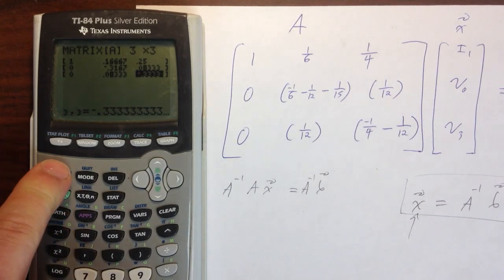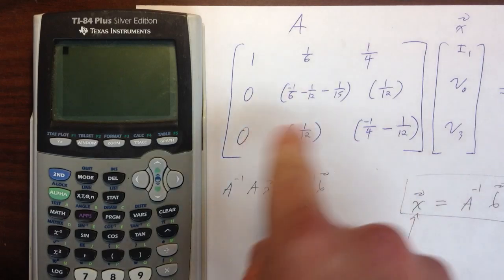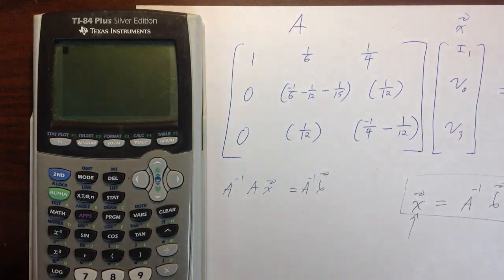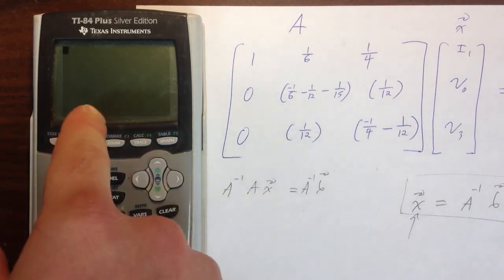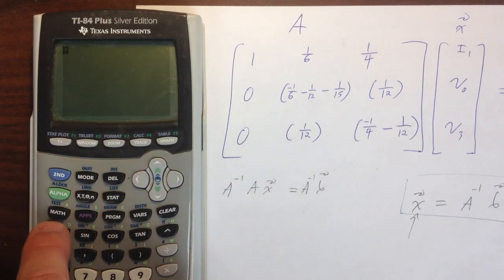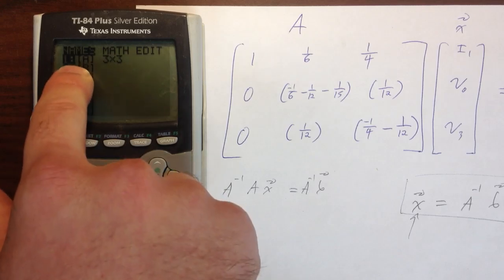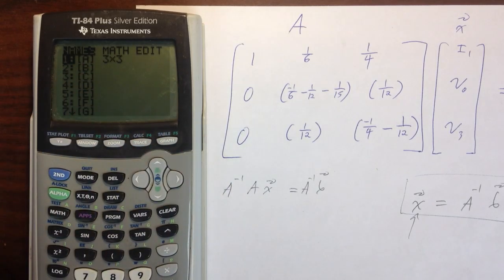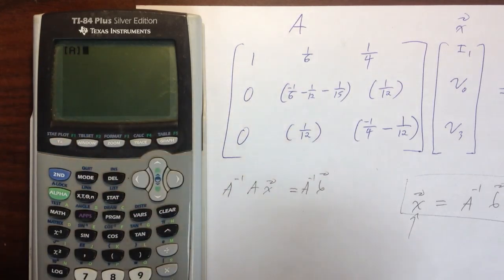Now I'm going to second quit out of that. Notice I didn't have to save my A matrix after that. After I enter in each one of these entries, the A matrix gets saved, so I don't have to worry about that. If I wanted to grab that A matrix and get it to my home screen so I could do stuff with it, I would go back to my matrix menu, second matrix. I could just grab under the names column, grab this variable, so I'm going to push enter. Now I've got my A matrix here so I can do stuff with it.